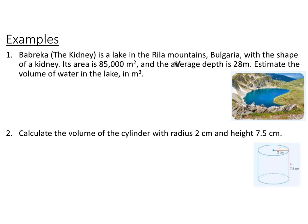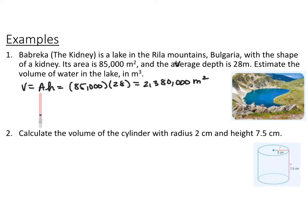Babreka, or the kidney, is a lake in the Rila Mountains of Bulgaria with the shape of a kidney. The surface area of the lake is 85,000 square meters and the average depth is 28 meters. We estimate the volume of water using volume equals area of the base times the height, so 85,000 times 28, giving a volume of 2,383,000 cubic meters.